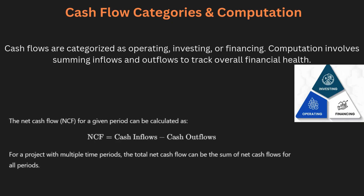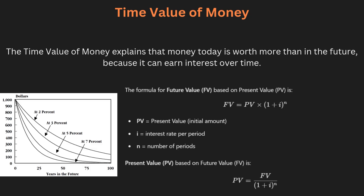Cash flow can be categorized into several types: operating cash flow means day-to-day business, investing cash flow means buying or selling assets, and financing cash flow covers loans or issuing shares. Engineers need to understand these categories to calculate the total cash flow in a project. Computation involves summing up all inflows and outflows for each time period. The goal is to ensure that the project generates more cash than it spends, ensuring profitability. Regularly computing cash flow helps in making timely financial decisions.